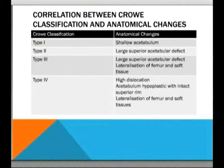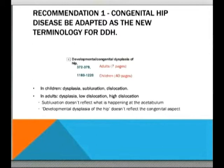That's my background and quick review of working knowledge regarding developmental dysplasia of the hip. I'll now move on to the recommendations made by the authors of the article. The first recommendation is that when approaching this condition from an adult perspective, we move away from the term 'developmental dysplasia of the hip' and instead replace it with 'congenital hip disease.'